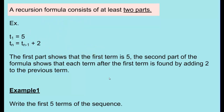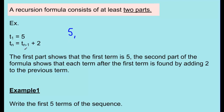If we didn't have the first part, we wouldn't know which number to start with. So let's write out the terms of the sequence. Term 1 is 5. The next term is the term before it plus 2: 5 plus 2 is 7. The next term: 7 plus 2 is 9. Continuing: 11, 13, and so on.